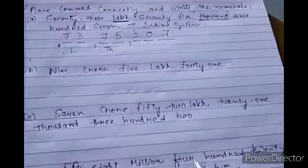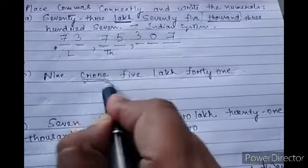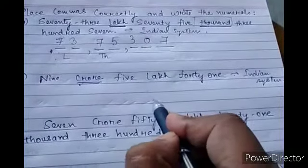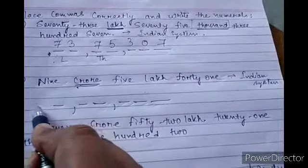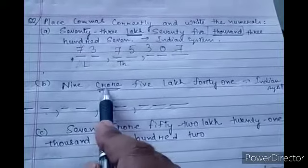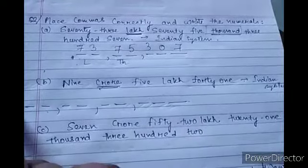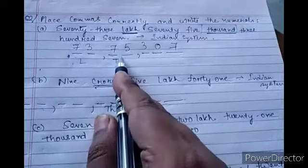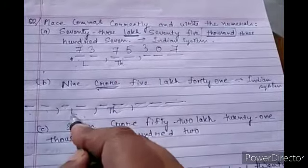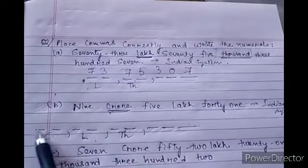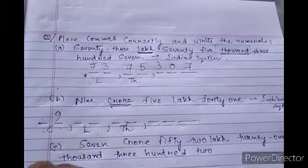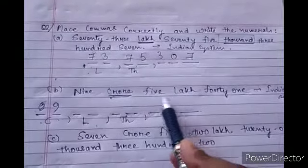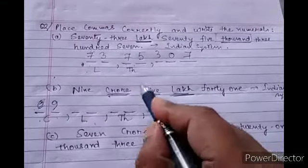Next question: nine crore, five lakh, forty-one. This is also in the Indian system. We make boxes: ones, tens, hundreds, comma, thousands, ten thousands, comma, lakhs, ten lakhs, comma, crore, ten crore. For crore we write nine — nine crore. Zero for ten crore since there's no ten crore value. Zero has no value so we don't write it leading.